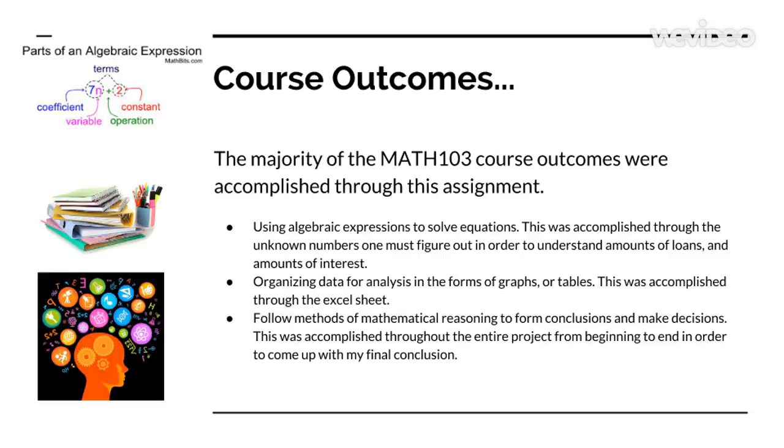The course outcomes. The majority of the Math 103 course outcomes were accomplished with the assignment. For example, using algebraic expressions to solve equations — this was accomplished through the unknown numbers one must figure out in order to understand amounts of loans and interests — organizing data for analysis in the forms of graphs and tables. This was accomplished through the Excel sheet and following methods of mathematical reasoning to form conclusions and make decisions. This was accomplished throughout the entire project in order to come up with my final conclusion when I finished the Portfolio Project.